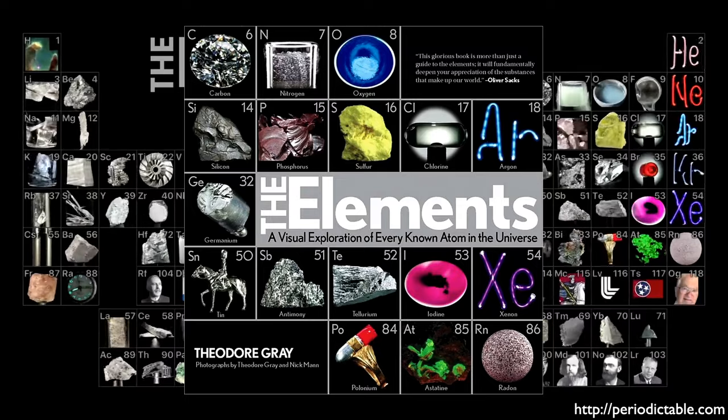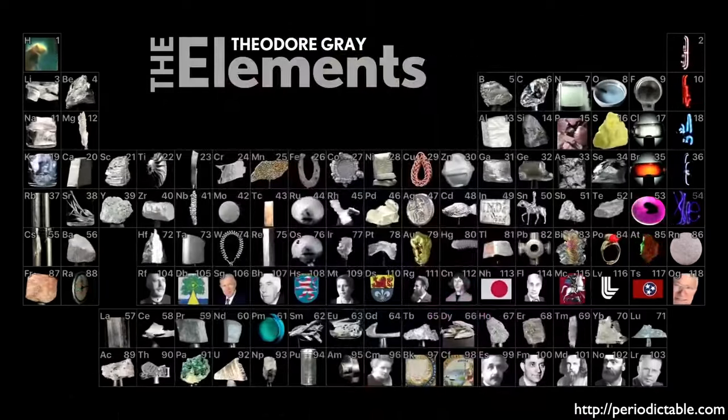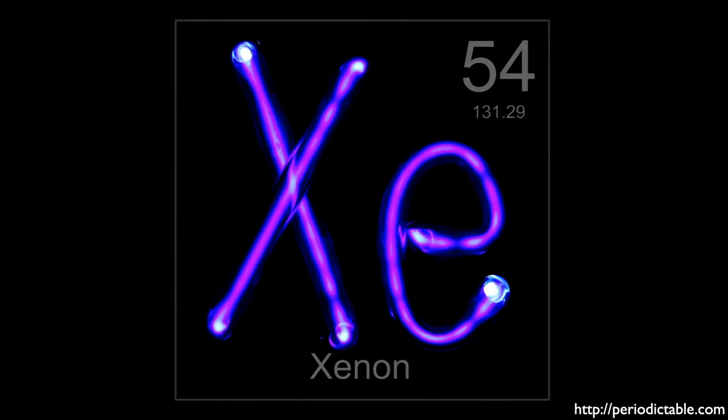Check out his fantastic website, Periodictable.com. Xenon is the 54th element in the Periodic Table. Its atomic number is 54 because that's how many protons are in its nucleus, and that is what distinguishes it as this unique element.